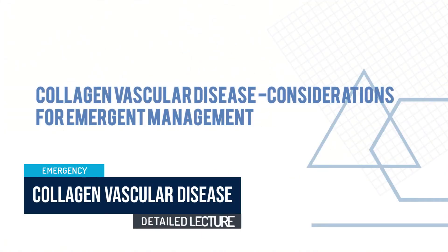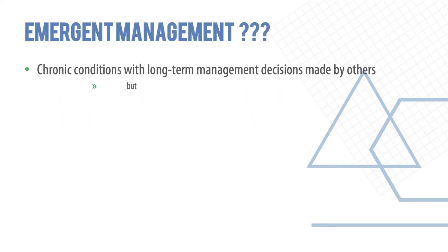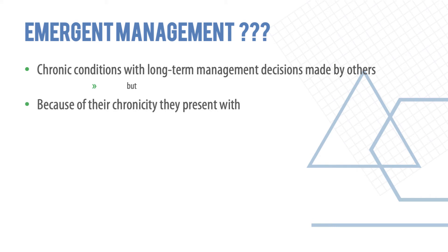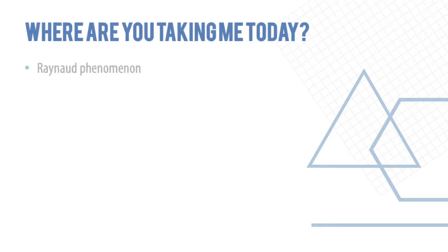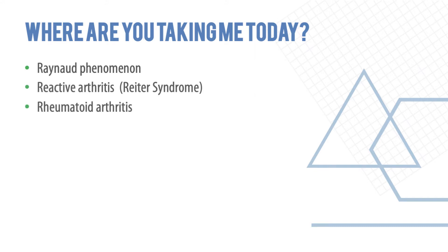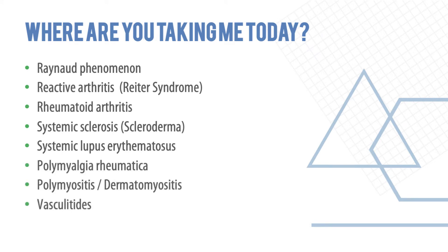Collagen vascular diseases can present in emergency, so we need to know the presentations and how to deal with them. These are chronic conditions with long-term management decisions — things like rheumatoid arthritis and systemic lupus erythematosus. Because of their chronicity, they can sometimes present as flare-ups with organ involvement and occasionally determine the initial diagnosis. We'll be talking about Raynaud's phenomenon, reactive arthritis, rheumatoid arthritis, systemic sclerosis, SLE, polymyalgia rheumatica, polymyositis, and vasculitis.